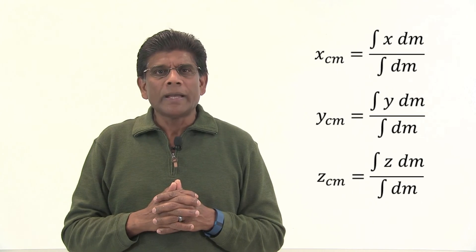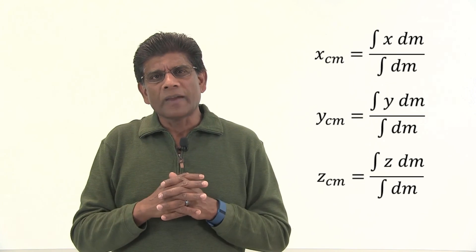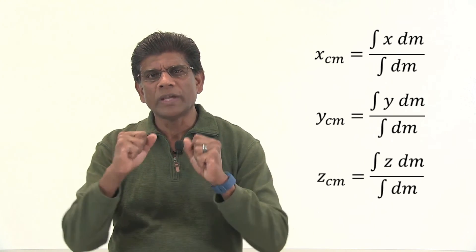If the mass of the object is not uniformly distributed, center of gravity can be calculated using calculus. Mathematically, the location of the center of gravity is the average location of the weight of an object.